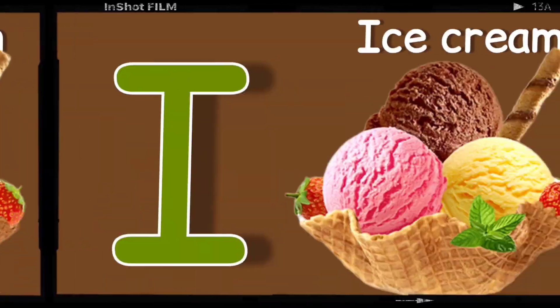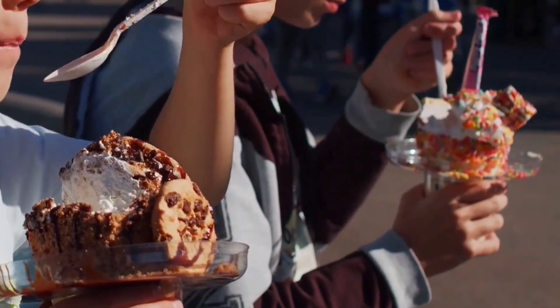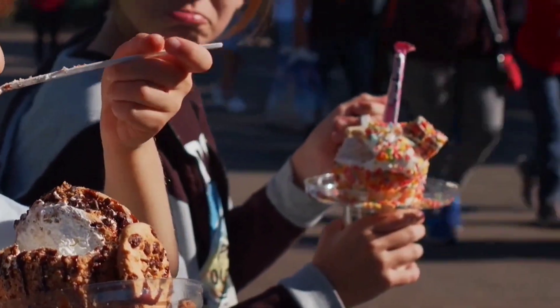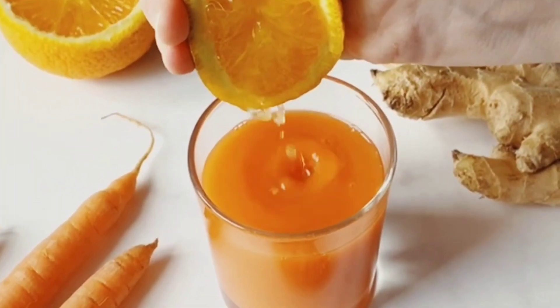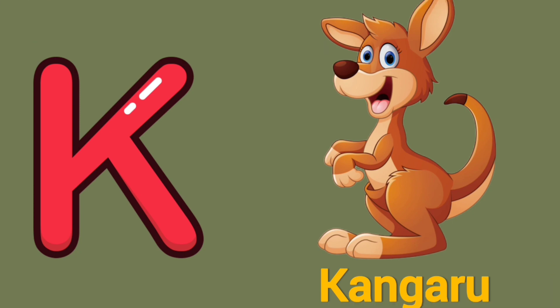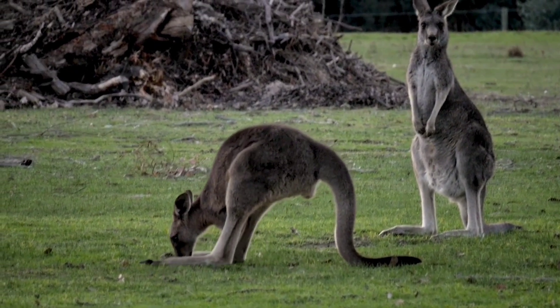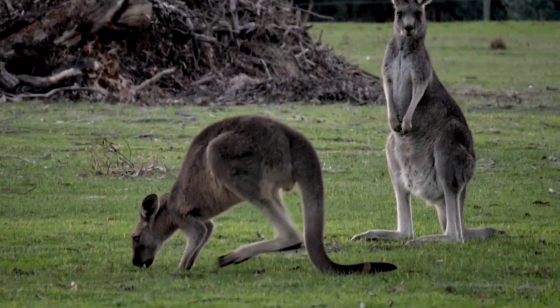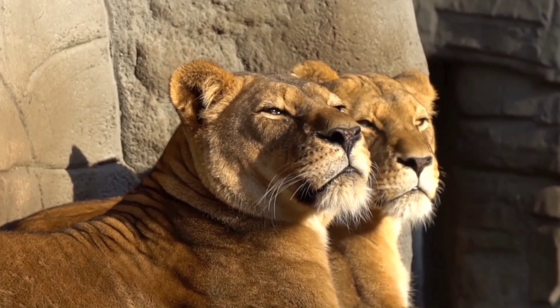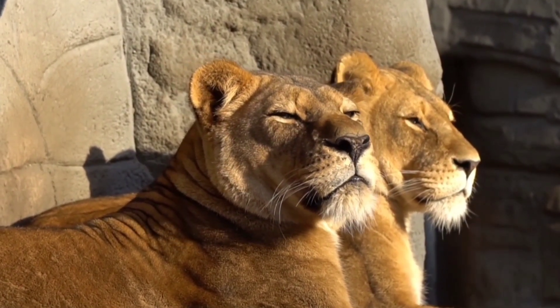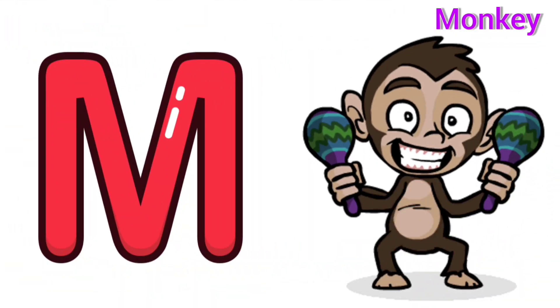I for Ice Cream. J for Juice. K for Kangaroo. L for Lion. M for Monkey.